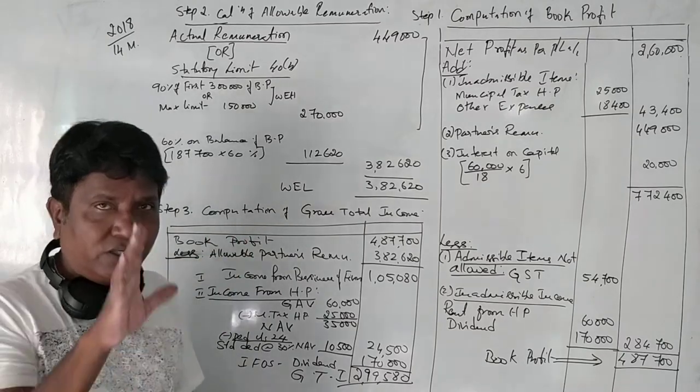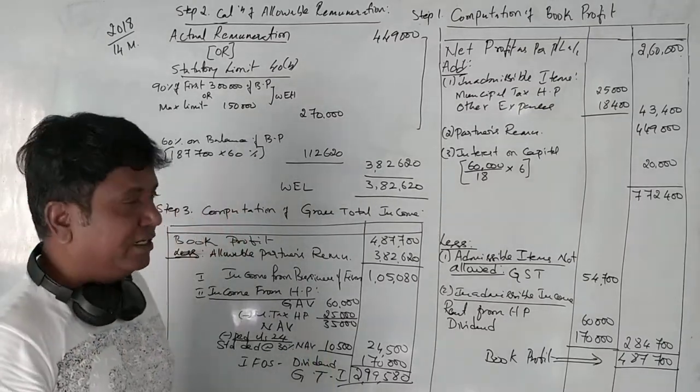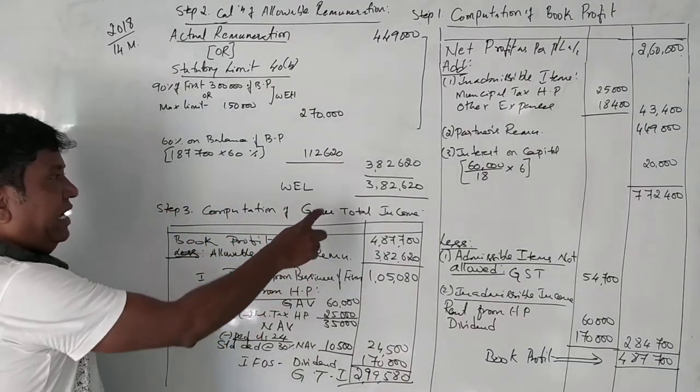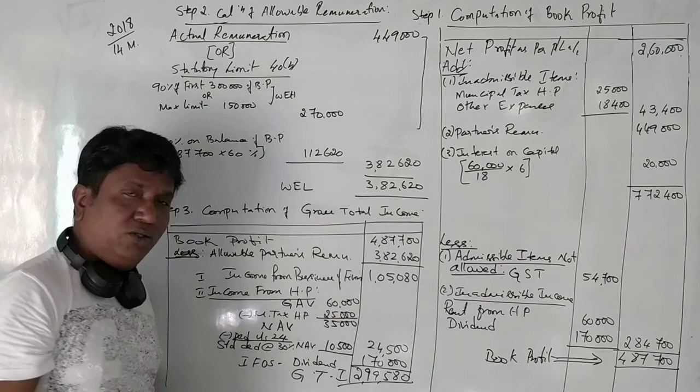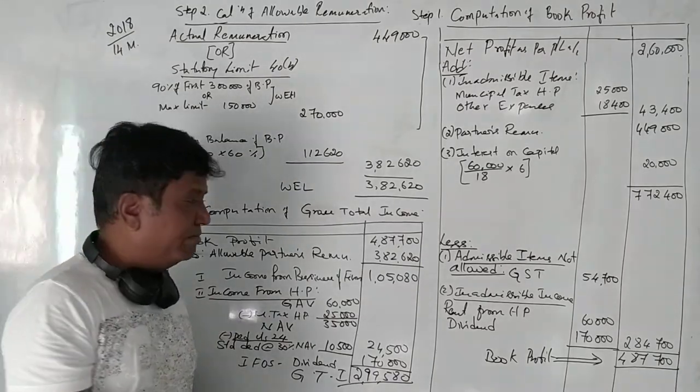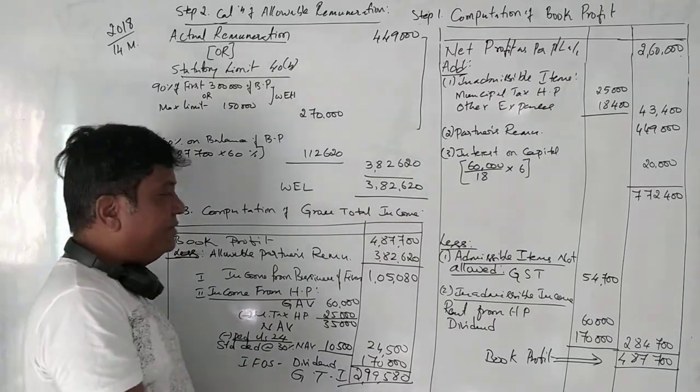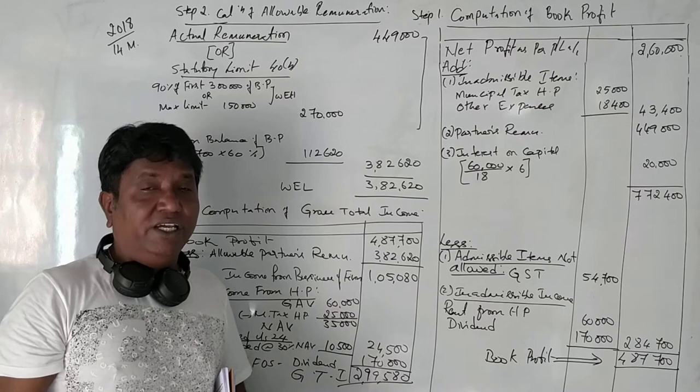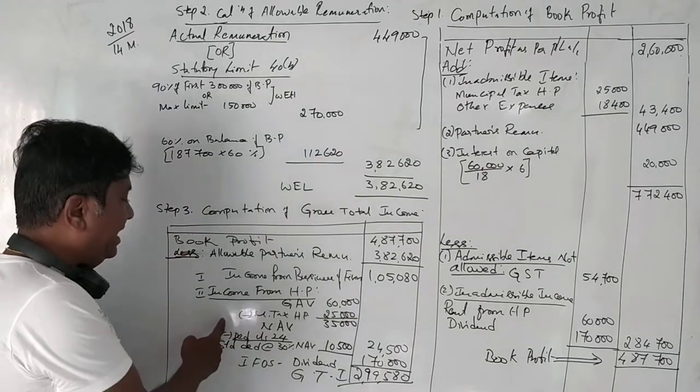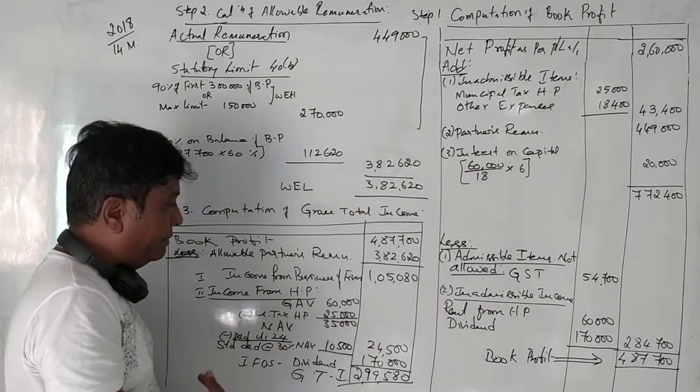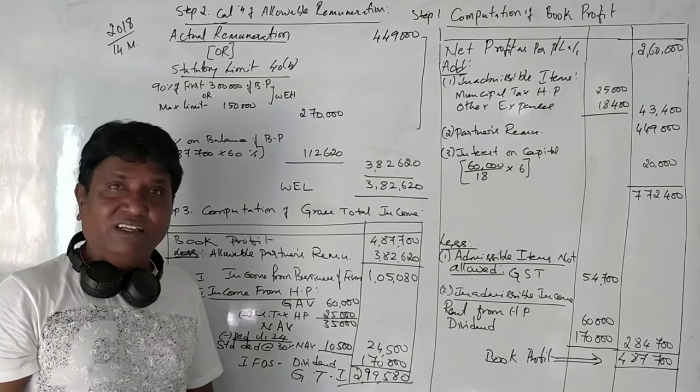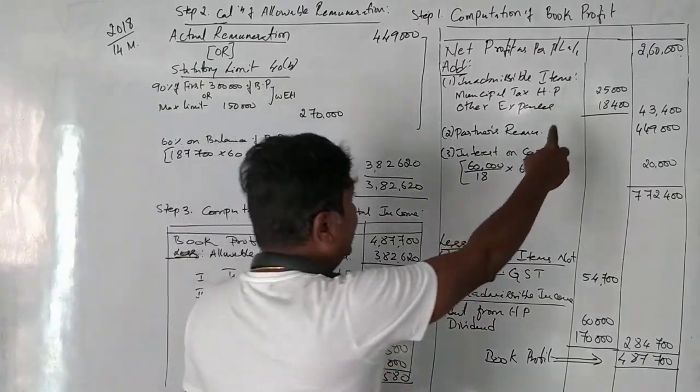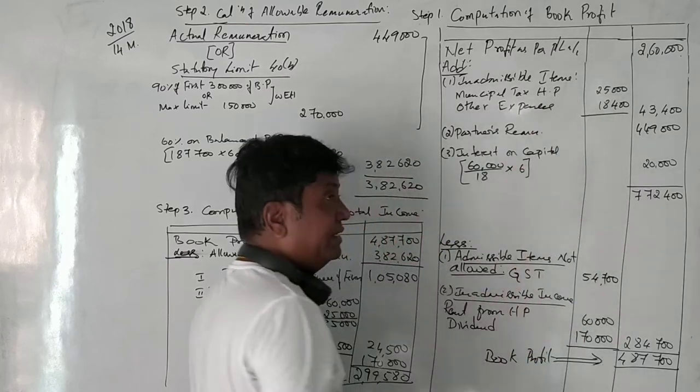Step number 3 is computation of gross total income. When we start calculating the gross total income, first we should calculate income from partnership firm business. Book profit is 4,87,700. Allowable remuneration is 3,82,620. And income from business of firm is 1,50,080. In this problem, rent from house property is given as 60,000. Nowhere it is given that rent from house property is computed. If it is not given the word computed, then we take whatever the rent we collected from house property, which we call it as a gross annual value. Gross annual value is 60,000 less municipal taxes paid is 25,000, which is given here. This is the income from house property and this is the expenses of house property.